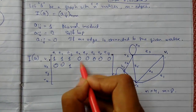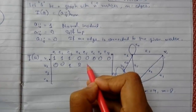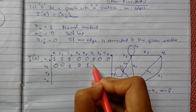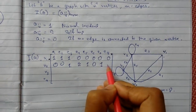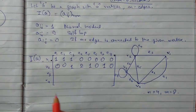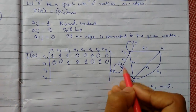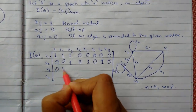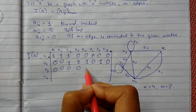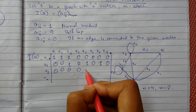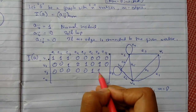Continuing with the next row, E3 is here. For this vertex, E1 is 1, E2 is 1, E3 is 1, E4 is 1, E5 is 0, E6 is 1, and E7 is 1.